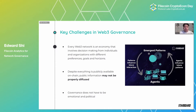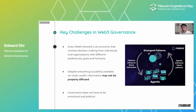Secondly, despite everything being publicly available on-chain, public information is actually not properly diffused. If I ask you what is the current state of the network, what are some population statistics, or what are some micro trends and issues existing in the network — we need expertise, or a middle layer, to actually extract that kind of on-chain data insights from the blockchain architecture and make them available to the general public.